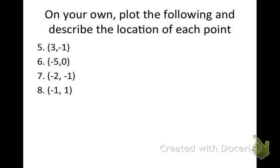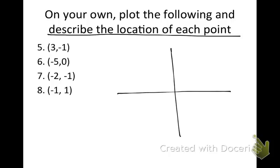In your notebook, you're writing this down. You're going to draw your coordinate plane and graph all of these locations. Label them 5, 6, 7, and 8, so I should see that in your notebook. On the text box to the right, you're going to describe the location of each point - is that in Roman numeral 1, 2, 3, or 4? Pause the video when you're ready to move on, answer the questions in the text box, then go ahead.